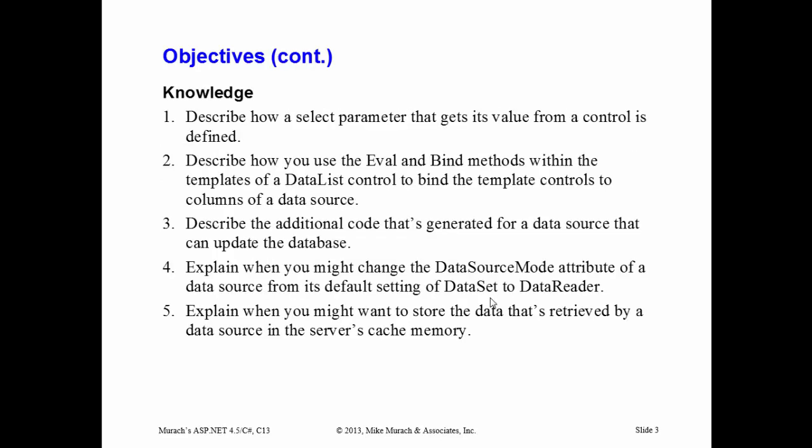Some of the knowledge covered: how to use select parameters to get a value from a control — in particular, to filter data displayed to the user. How to use the eval and bind methods, which get generated for data sources automatically. We'll talk about templates in a data list control for formatting data using template editing. We'll also cover the additional generated code for updating the database, the data source mode attribute (data set vs. data reader), and why you might store retrieved data in server cache memory for performance reasons.